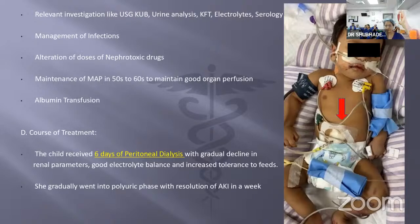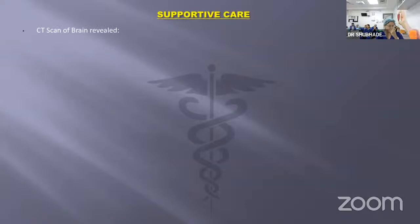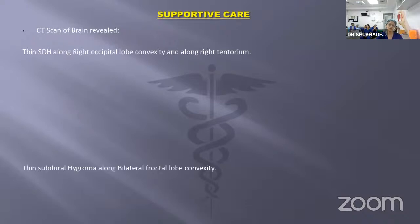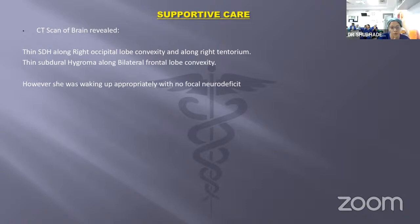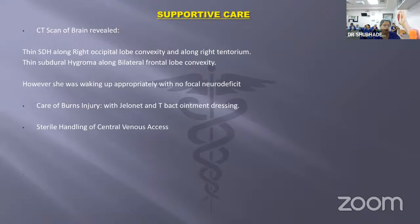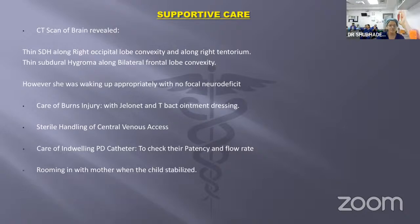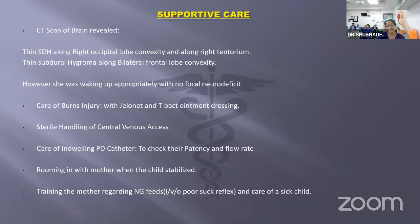Other supportive care: CT brain showed a thin subdural hematoma along the right occipital lobe convexity and right tentorium, and thin subdural hygroma along bilateral frontal lobe convexity. Neurological examination was appropriate with no focal deficits. Burns injury was cared for with gel and T-bact ointment dressings. Central venous access was handled with complete sterility. Patency and flow rate of the indwelling catheter were regularly checked. Mother was roomed in and trained for NG feeds, and prevention of re-exposure was ensured.